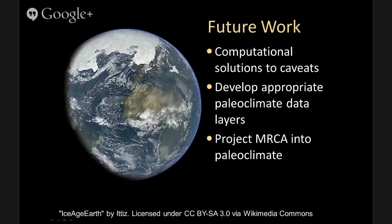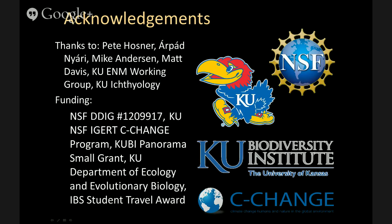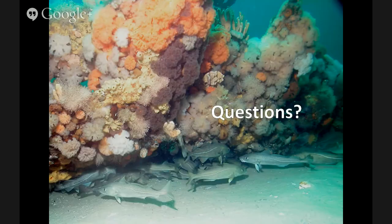For future work, I'm interested in computational solutions to both caveats, and I'm developing appropriate paleoclimatic data layers to project the most recent common ancestors into the paleoclimate for a more specific model of the group's biogeographic history. I'd like to acknowledge Pete Hosner, Arpi Nayeri, Mike Anderson, Matt Davis, the KU Ecological Niche Modeling Working Group, and KU Ichthyology. This work was funded by an NSF DDIG grant, a KU NSF IGERT Sea Change Fellowship, the KU Biodiversity Institute, the KU Department of Ecology and Evolutionary Biology, and an International Biogeographic Society Student Travel Award.